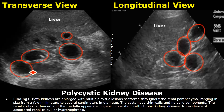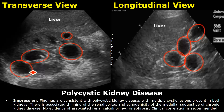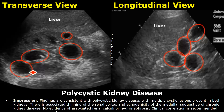This case of polycystic kidney disease was also associated with chronic kidney disease. In the impression, you can mention the polycystic kidney disease with multiple cystic lesions present in both kidneys. If there are other abnormalities as well, you can mention them here. And in the end, you can write about clinical correlation.